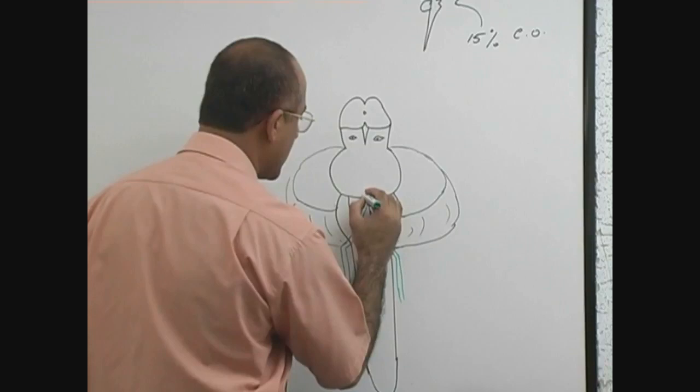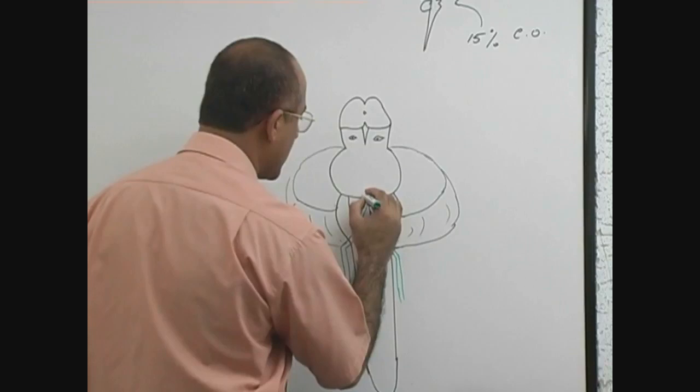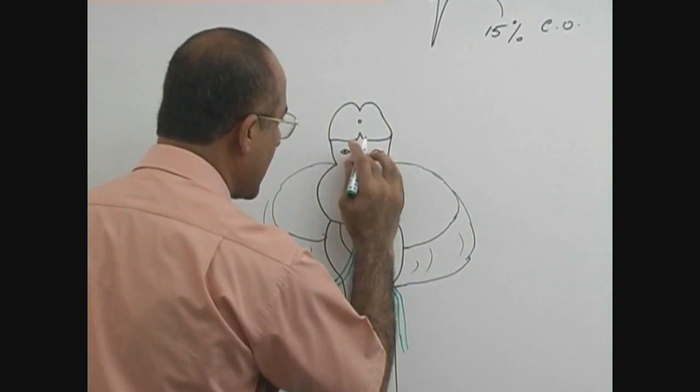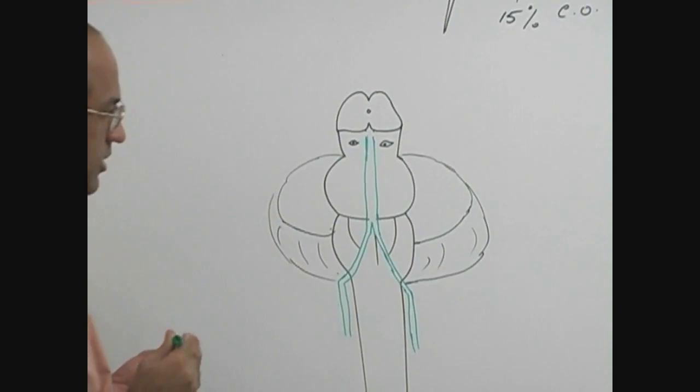And they move upward as one united trunk which is called basilar artery. Which is called basilar artery.